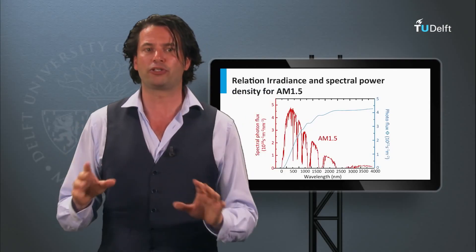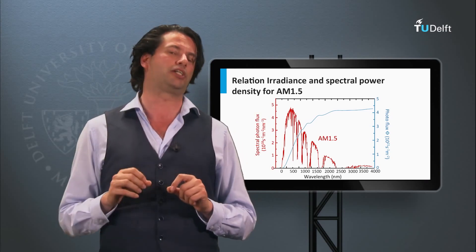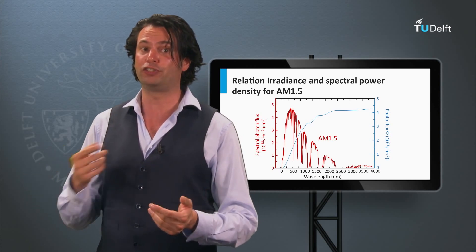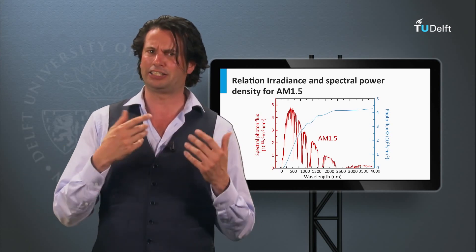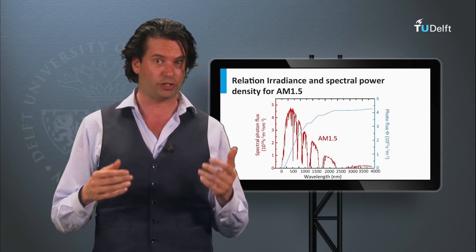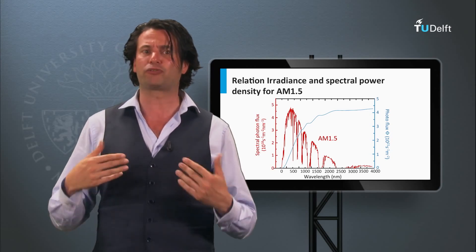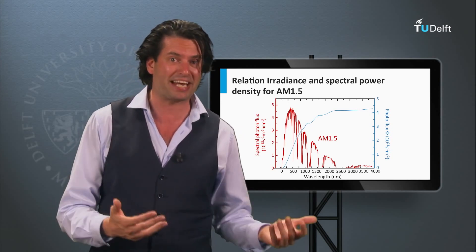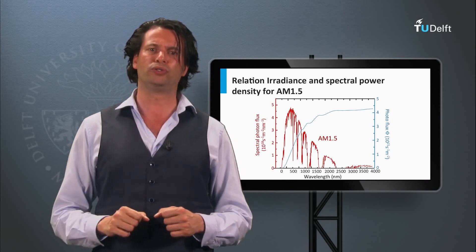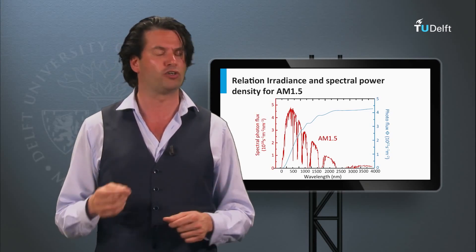As we will discuss in the coming two weeks, every photon can result in one collected charge carrier. This means that the photon flux of the solar spectrum in theory determines the maximum current per area we can generate with a solar cell. So the concept that light can be described by quantized packages of energy, as proposed by Einstein, is a very important tool to calculate the maximum possible conversion efficiencies of solar cells.